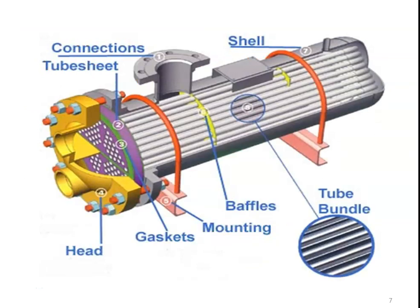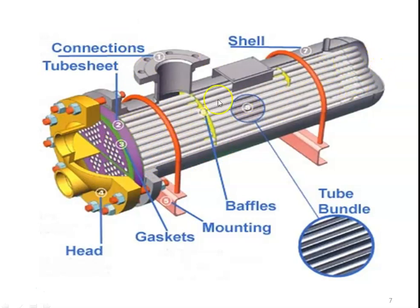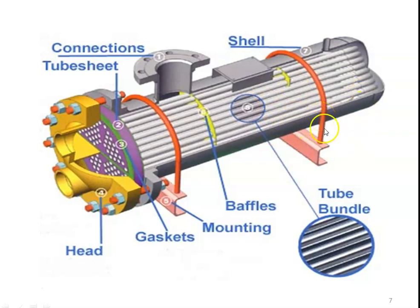This is an example of a shell and tube heat exchanger. We have a shell with the shell-side fluid entering on one side and leaving on the other. Inside the shell, we have a bundle of tubes running from left to right. The tube-side fluid enters, flows through the bottom tubes from left to right, takes a turn, flows back through the upper tubes, and leaves on the other side. This header collects the fluid. The inlet and outlet of the tube-side fluid and the inlet and outlet of the shell-side fluid are the four connections.